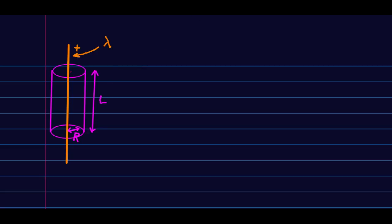First, a piece of terminology. I've already defined a closed surface around my line of charge, and we call these closed surfaces Gaussian surfaces. This surface is closed — it has end caps, it's closed around the sides, and it's a cylinder. The reason it's a cylinder is that we generally want to match the shape of our Gaussian surfaces to the symmetry of the charge distribution.